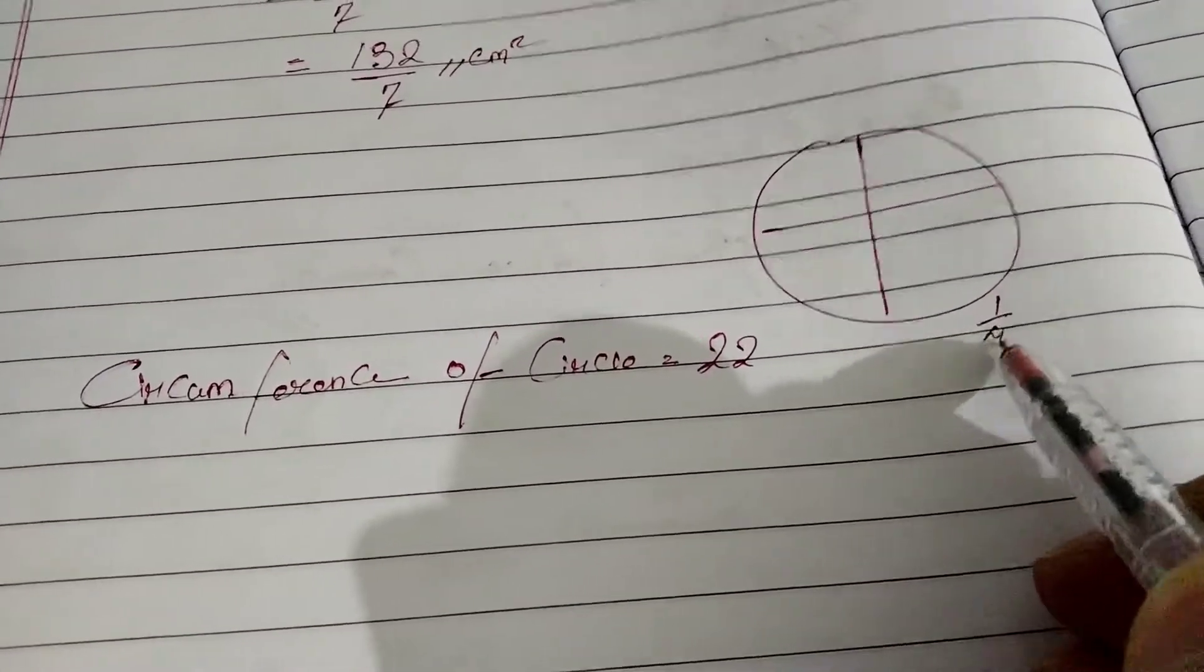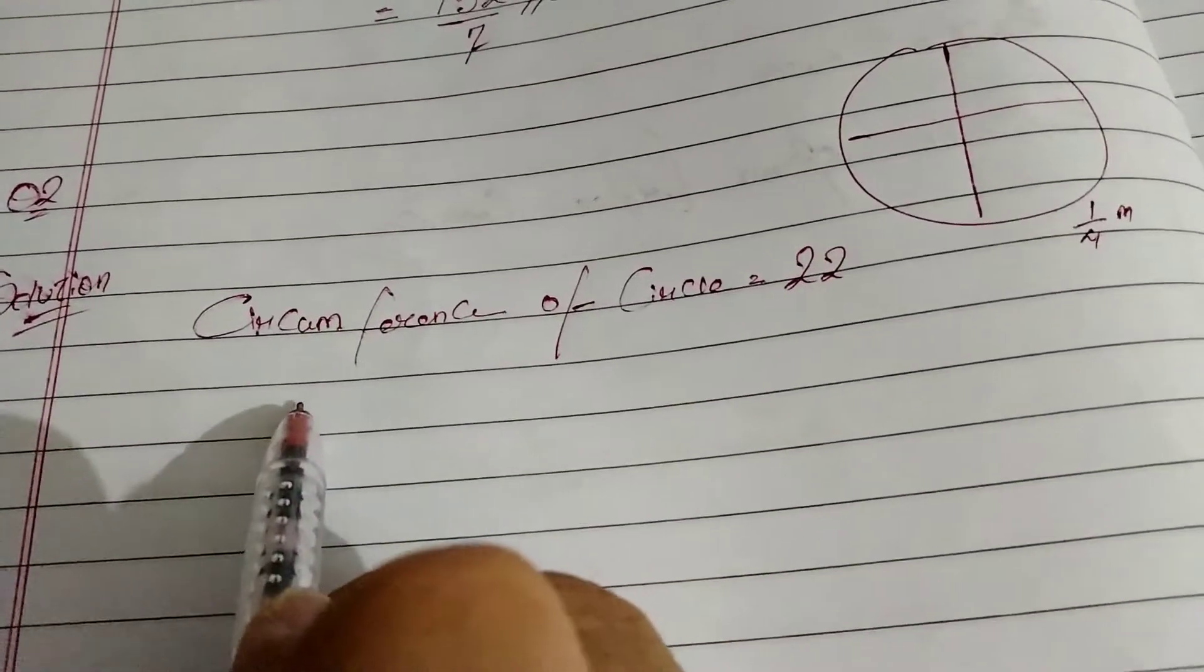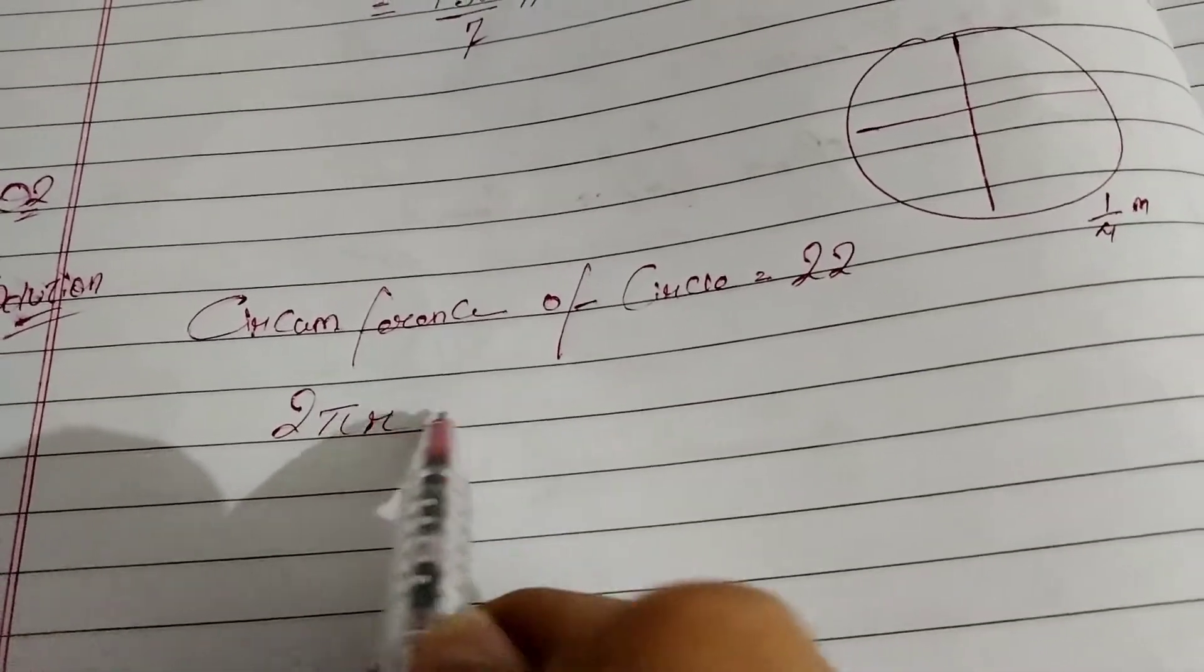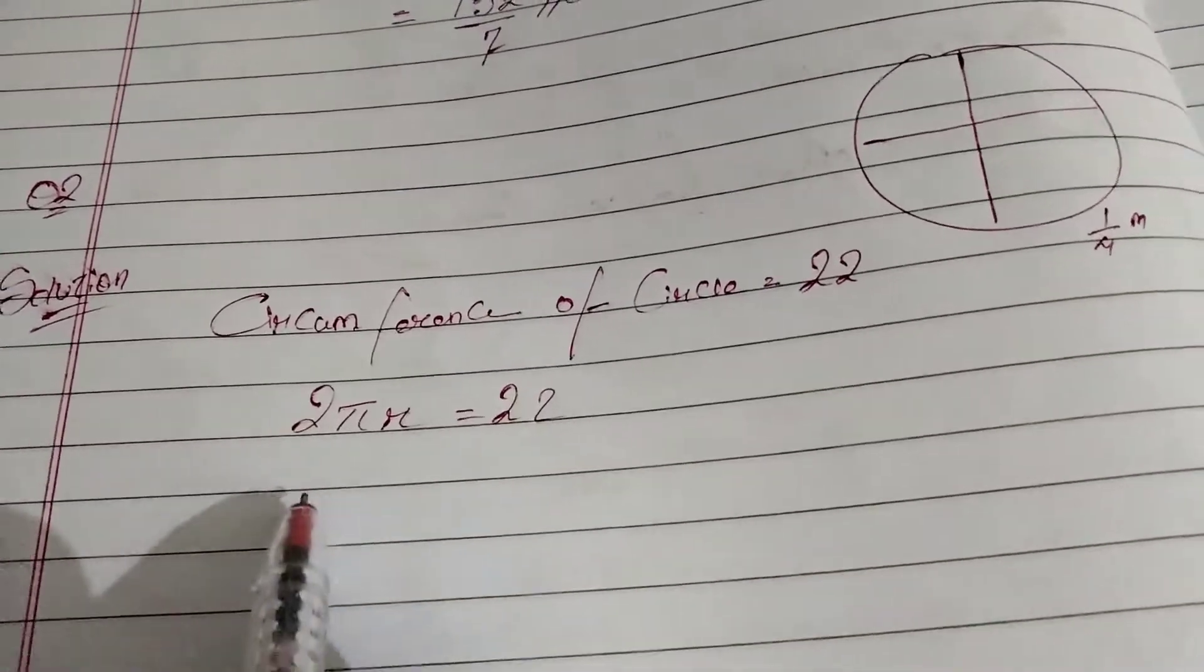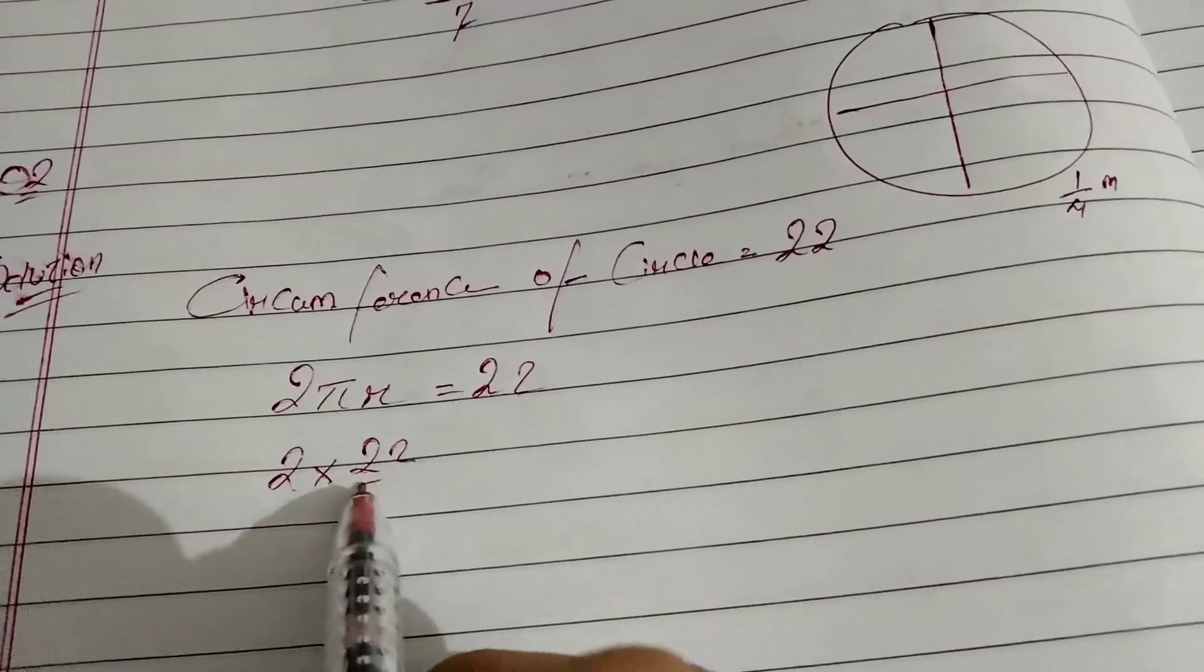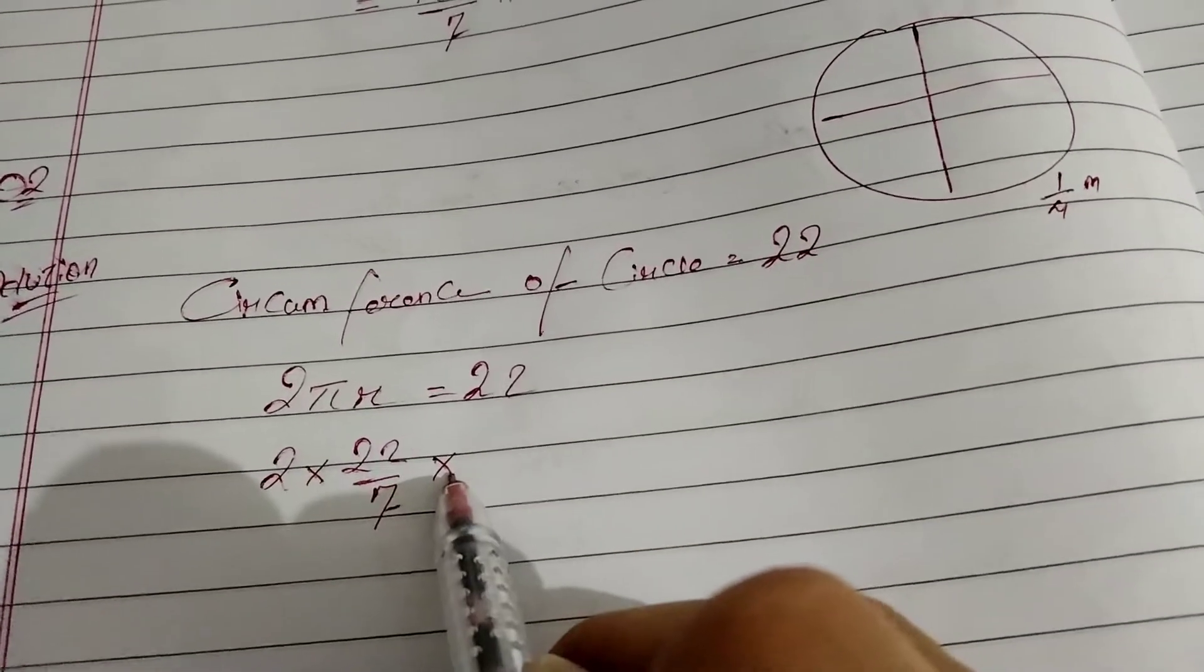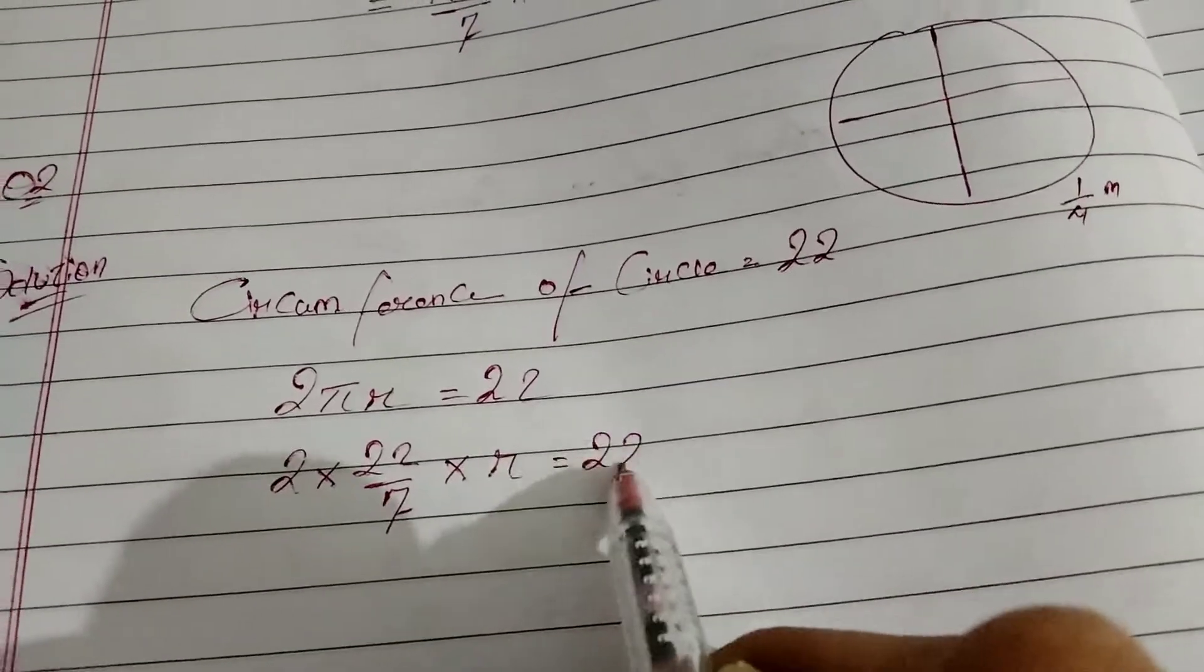So circumference formula is 2 pi r equal to 22. So we have 2 into pi is 22 by 7 into radius. We don't know the radius, so r equal to 22. Let's find the radius.